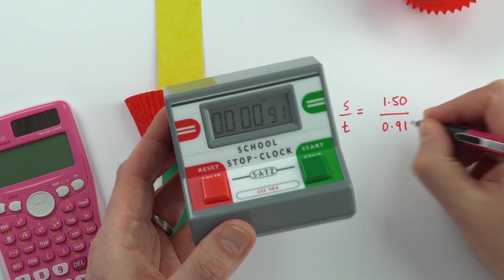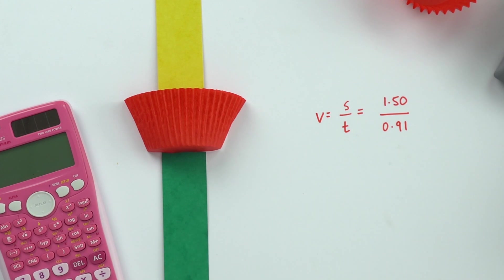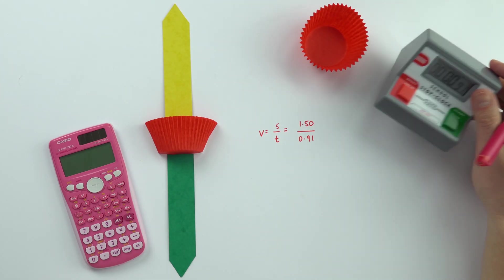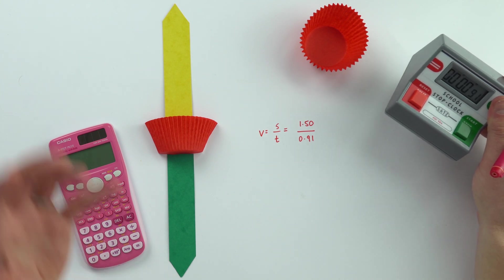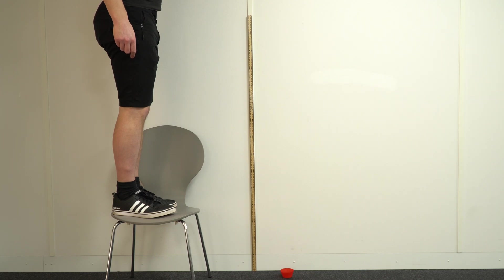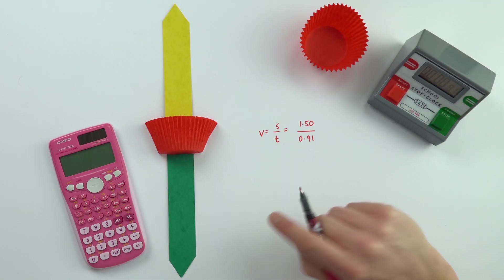If I was to do this in the classroom, I'd do it several times to take repeat readings and find my mean value. If you're working in pairs, it's easy for somebody to drop and the other person to time. There might also be a bit of human error with that.